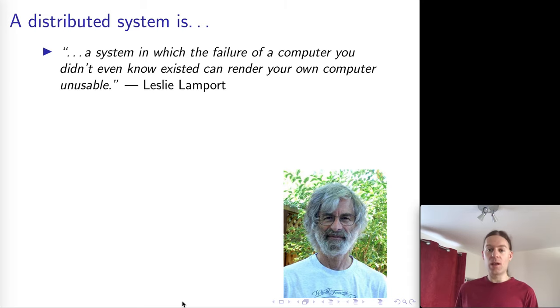A joking definition of a distributed system provided by Leslie Lamport is that a distributed system is a system in which the failure of a computer you didn't even know existed can render your own computer unusable. Whether this is a good definition or not we can debate, but Leslie Lamport is a bit of a legend in the area of distributed systems and we will see various aspects of the work that he's done over the decades. Of course lots of other people have done work in this area and we will see that over the course of these lectures.